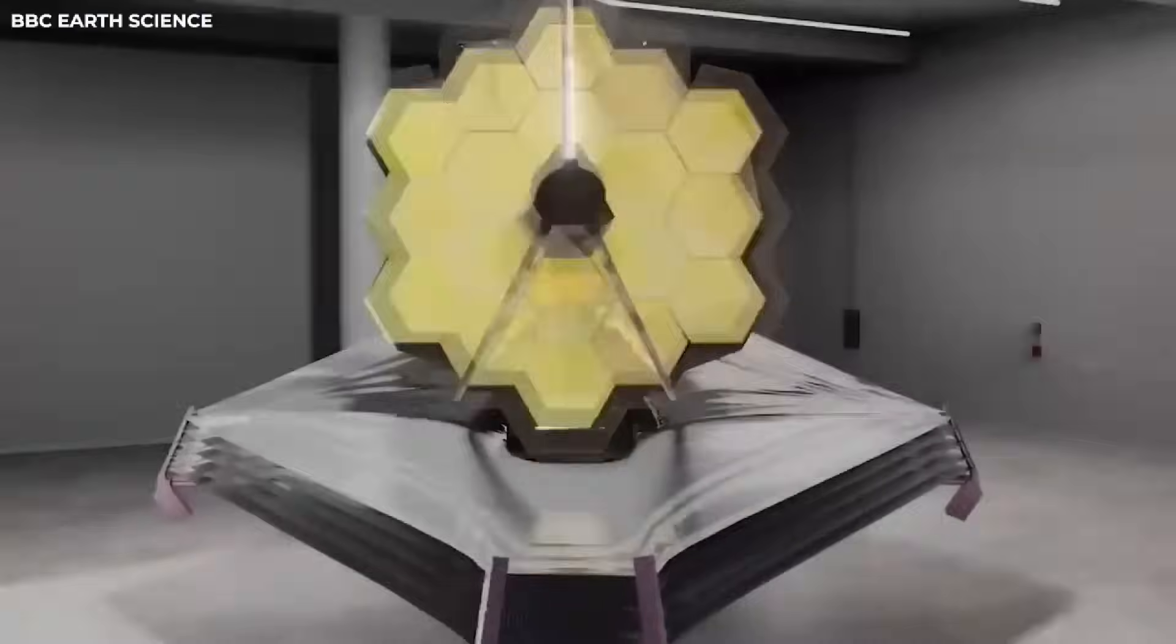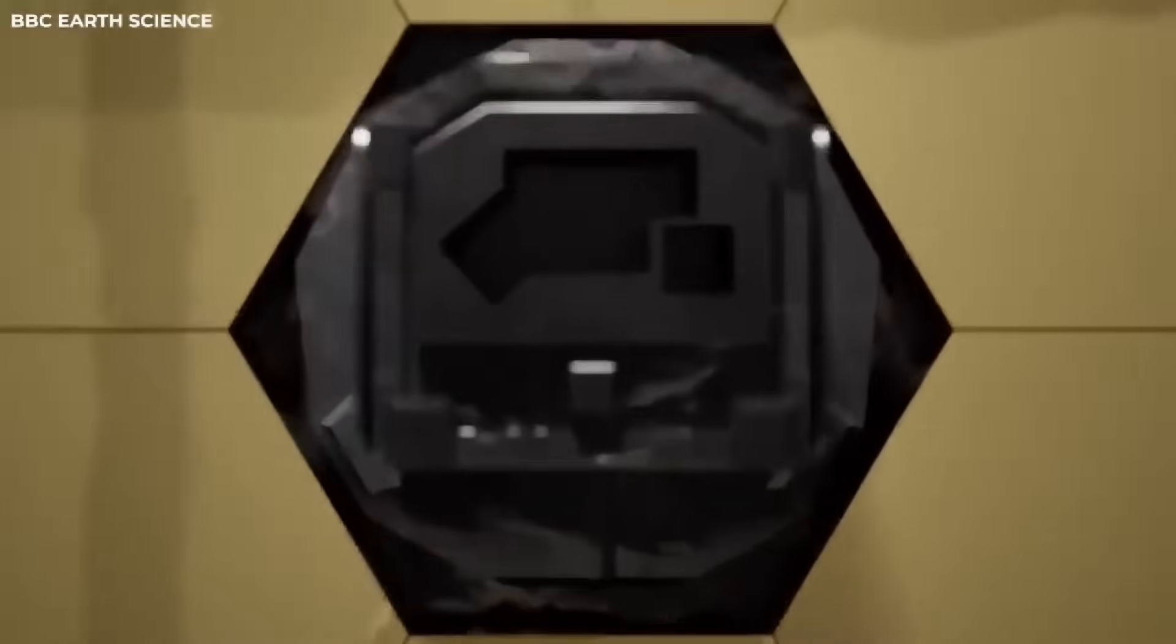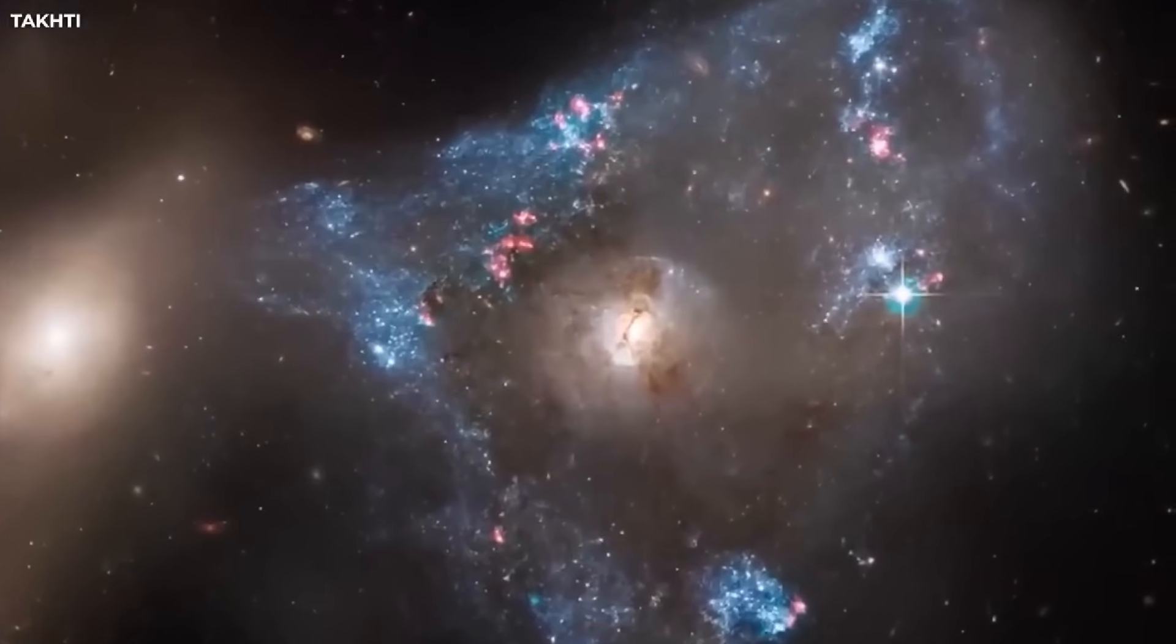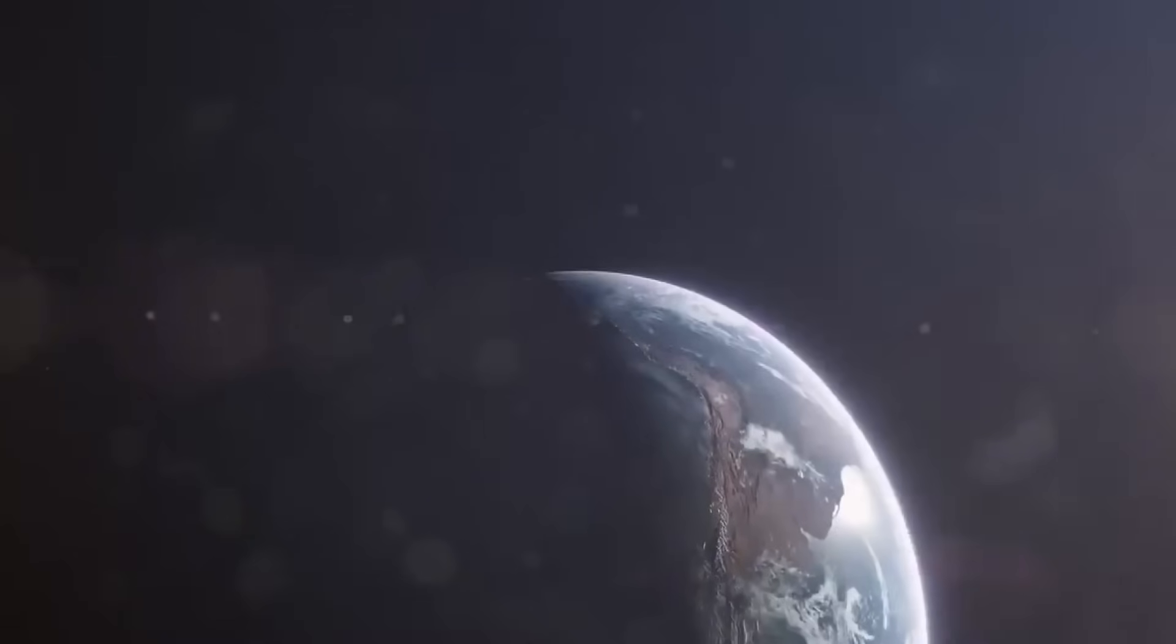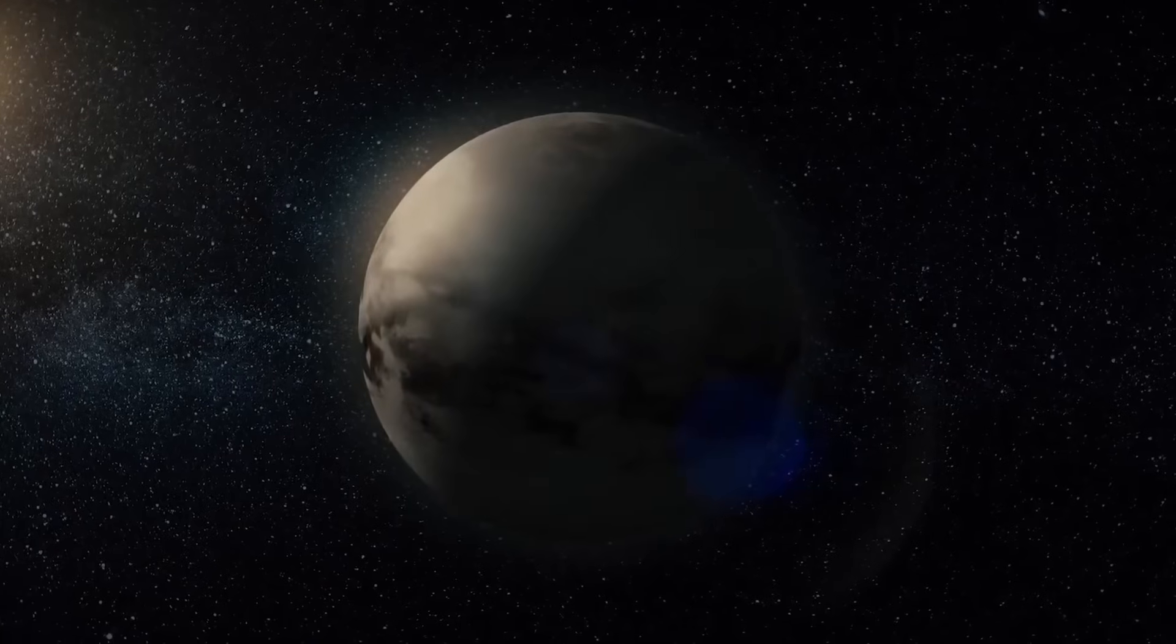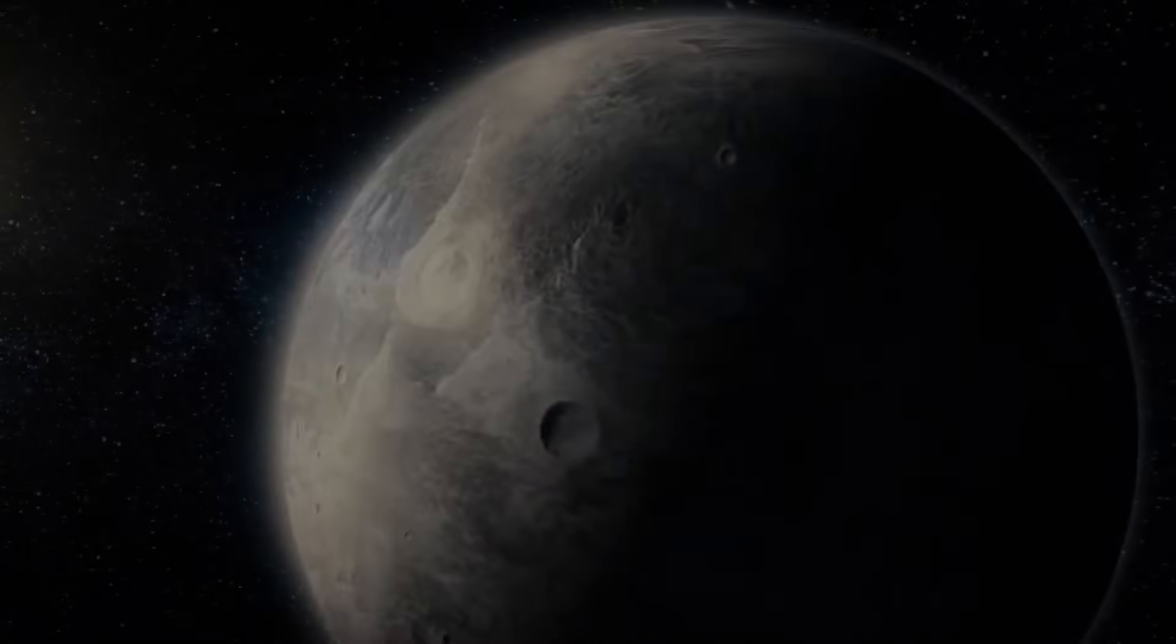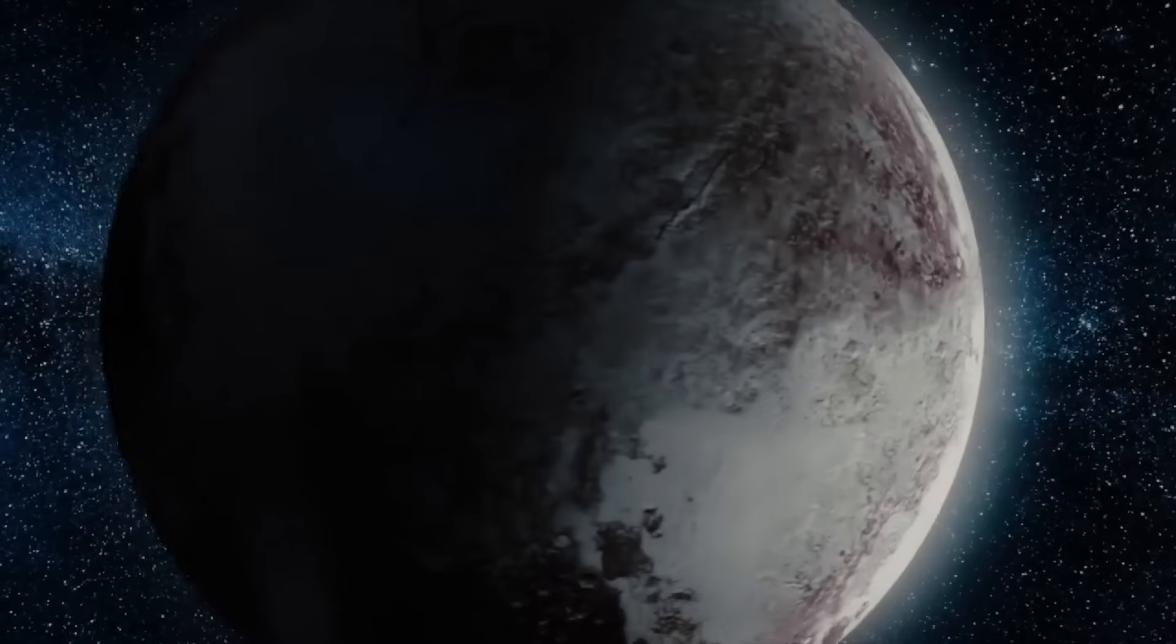One example is exoplanets, planets beyond our solar system that orbit red dwarf stars. These stars are relatively abundant in the cosmos, however they aren't as brilliant or warm as our sun. They do however provide unusual circumstances that could perhaps sustain life. Red dwarfs also give life plenty of opportunity to evolve since they live a lot longer than stars like our sun.